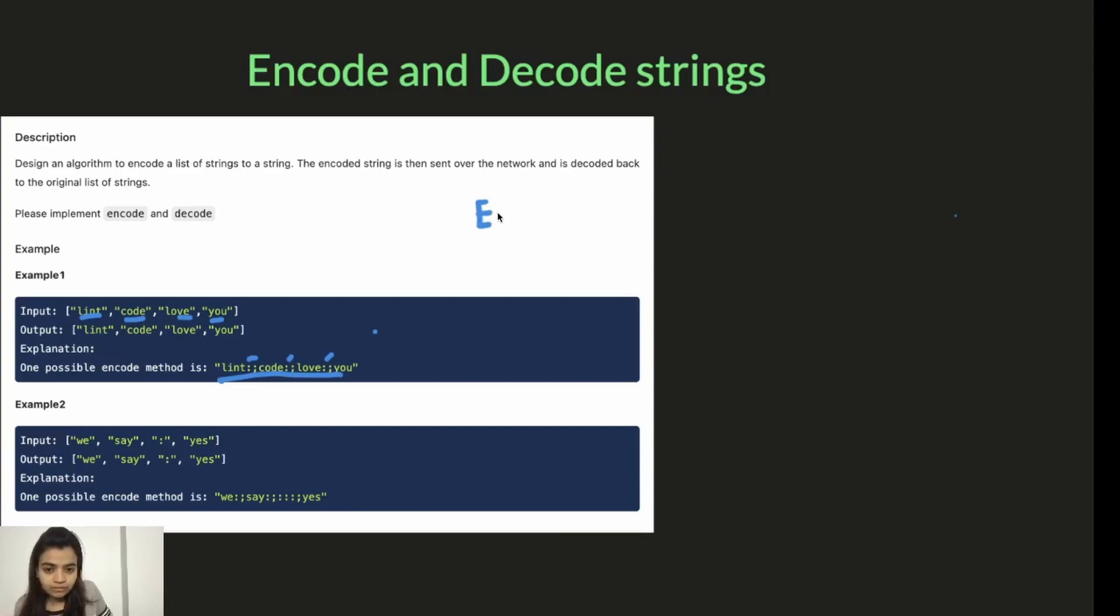First, we have our encode function. These are our four words: lint, code, love, and you. So what we are going to do is we are going to take the length of each word. So length is four of lint. Then add a hash next to it, so that we know that this is the number we have added and the number is not already there in the string. So four hash lint. Append the word to it. We will do the same thing for every single word in the array.